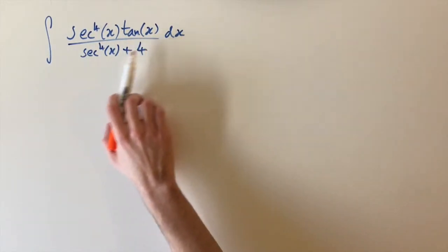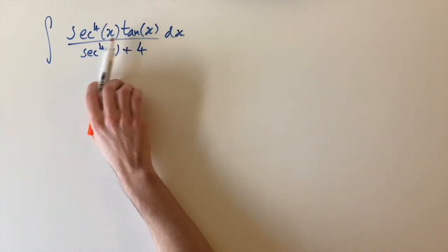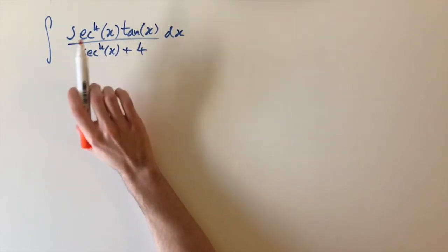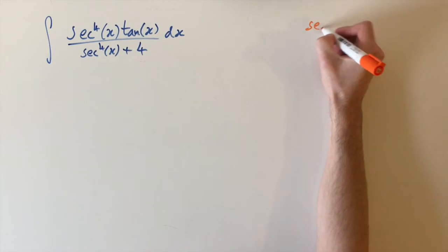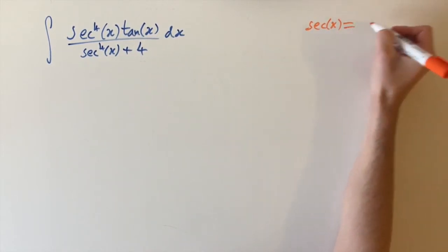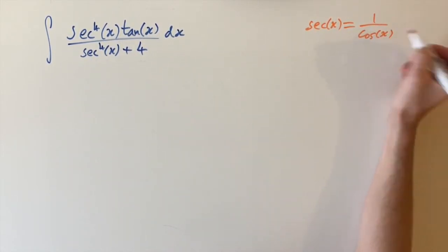We really need to remember the relationship between tan and sec to solve this problem. So first off, remember that sec is 1 over cosine. So that's how it's defined, 1 over cosine of x.